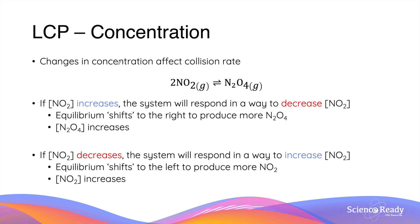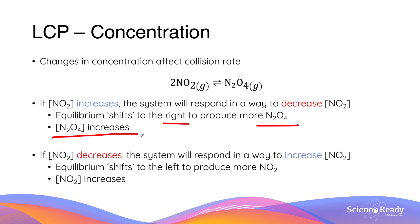Changes in concentration affect the collision rate and therefore the rate of reactions. If the concentration of nitrogen dioxide increases, then the system will respond in a way to decrease the concentration of nitrogen dioxide, obeying Le Châtelier's Principle. To do so, the equilibrium position will move to the right-hand side in order to produce more N₂O₄, and by doing so, the concentration of N₂O₄ increases.